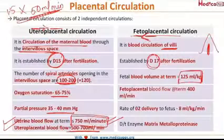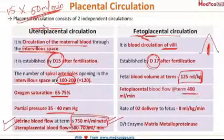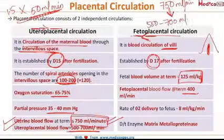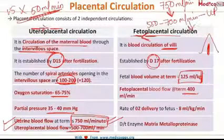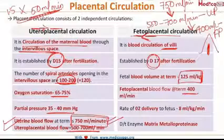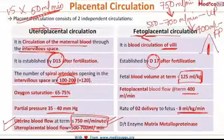The fetoplacental blood flow at term is 400 ml per minute. As a memory aid: uterine blood flow at term is 750 ml per minute, which decreases to 500–700 ml per minute in the uteroplacental circulation, and further decreases to 400 ml per minute in the fetoplacental circulation. The rate of oxygen delivery to the fetus is 8 ml per kg per minute.